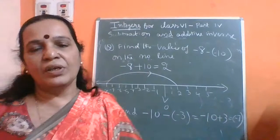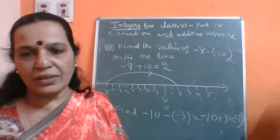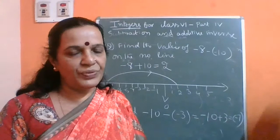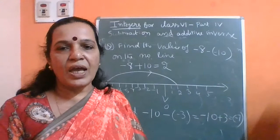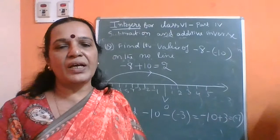While subtracting one integer from the other, just write the additive inverse for the second integer and follow all the three rules of addition: when both are plus, add the numbers and put a positive sign; when both numbers have a negative sign, add the numbers and put a negative sign; if one number has a plus sign and the other has a minus sign, find the difference and put the sign of the larger number. Thank you for watching and have a nice day.